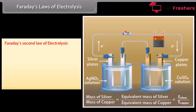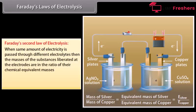Faraday's second law of electrolysis: When same amount of electricity is passed through different electrolytes, then the masses of the substances liberated at the electrodes are in the ratio of their chemical equivalent masses.